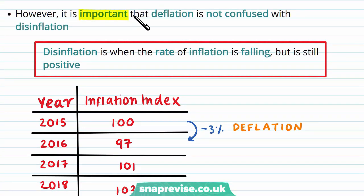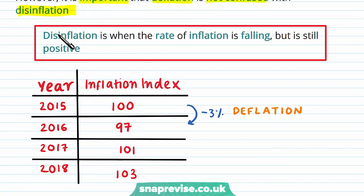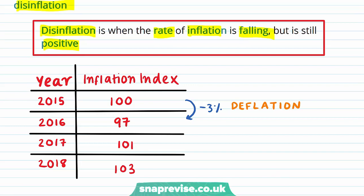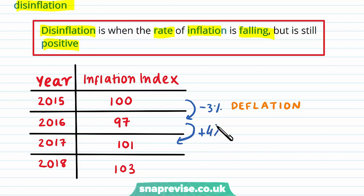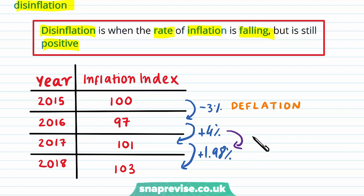It is important not to confuse deflation with disinflation. Disinflation is when the rate of inflation is falling but is still positive. For example, from 2015 to 2016 the rate was minus 3% — that is deflation. From 2016 to 2017 inflation increased to 4%, and then from 2017 to 2018 it fell to 1.98% — going from 4% to 1.9% is disinflation, because the inflation rate is lower than the year before but still positive.